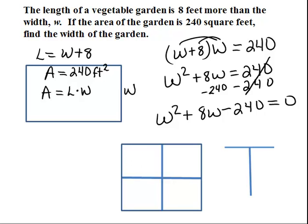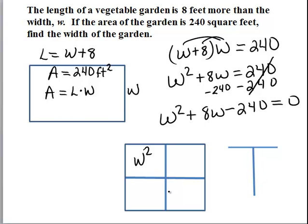And recall that we should always write the first term in the first box and the last term in the last box. So I'll write w squared here and minus 240 here.